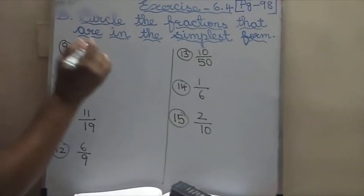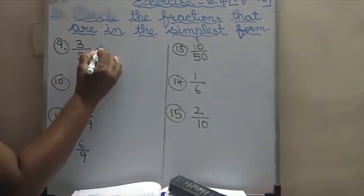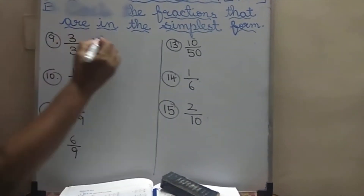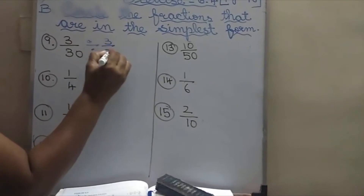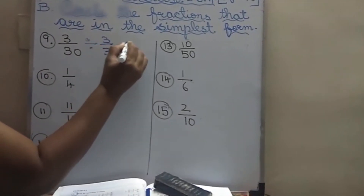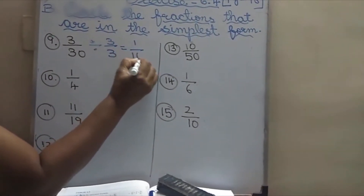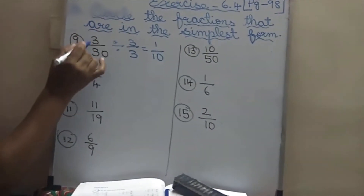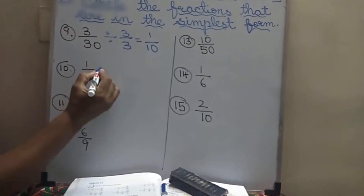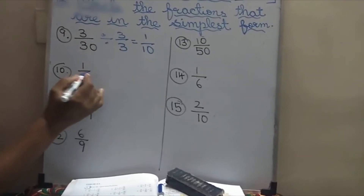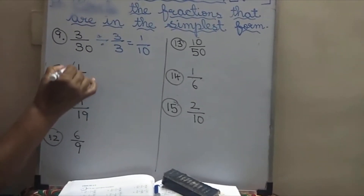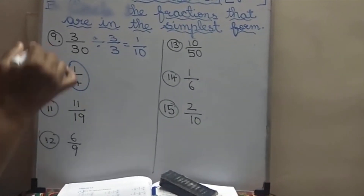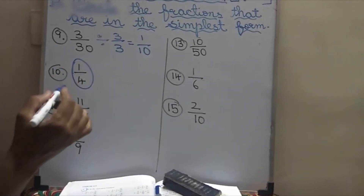You can divide 3 by 30 in 3 tables — 3 by 3. 1 3 is 3, and 10 3s are 30. So it is not the simplest form. And 1 by 4 — here you can't divide. So this is called simplest form — you have to circle it.